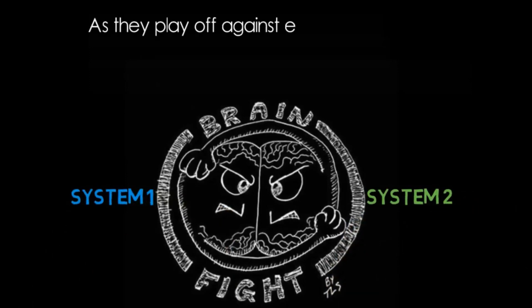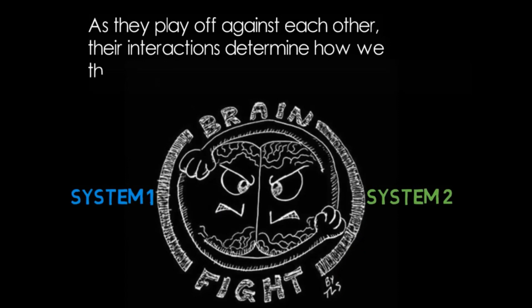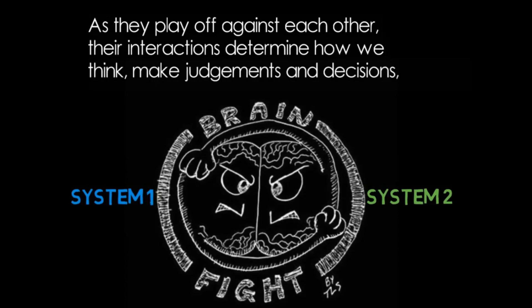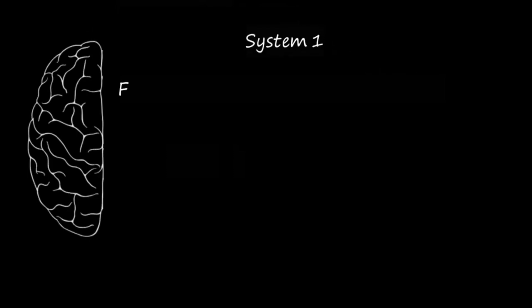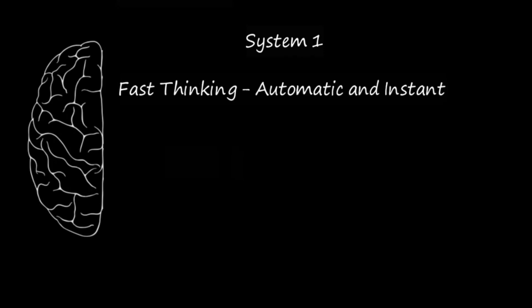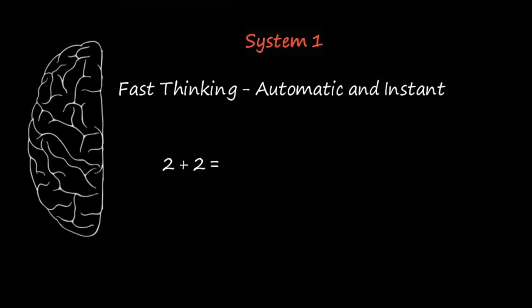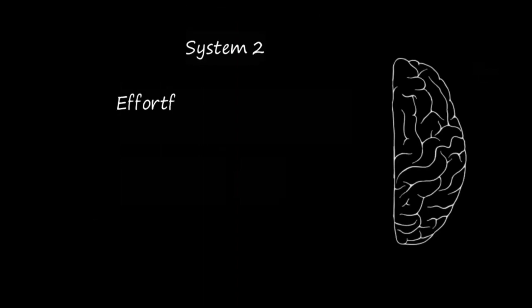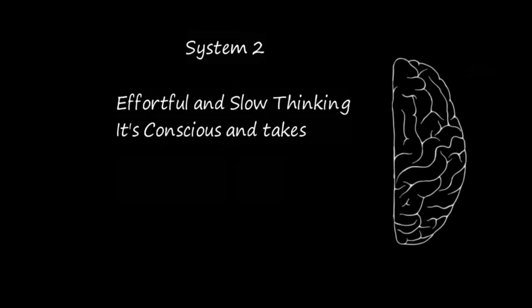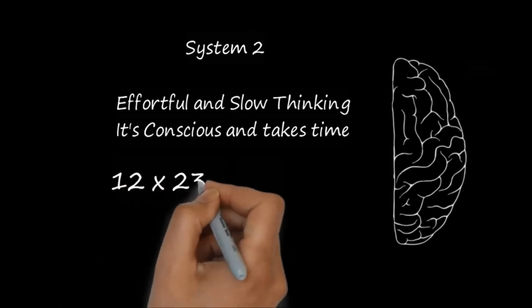The labels of System 1 and System 2 are widely used in psychology, but I go further than most in this book, which you can read as a psychodrama with two characters. When we think of ourselves, we identify with System 2, the conscious reasoning self that has beliefs, makes choices, and decides what to think about and what to do. Although System 2 believes itself to be where the action is, the automatic System 1 is the hero of the book. I describe System 1 as effortlessly originating impressions and feelings that are the main sources of the explicit beliefs and deliberate choices of System 2.